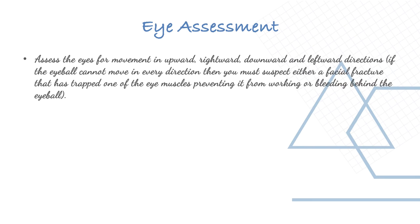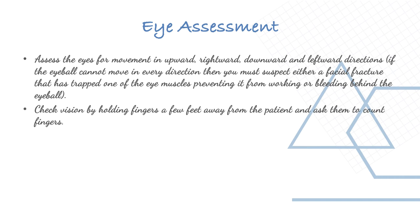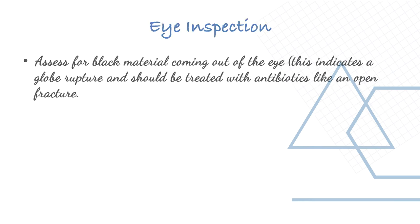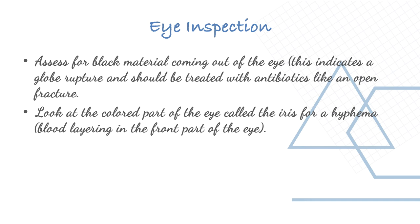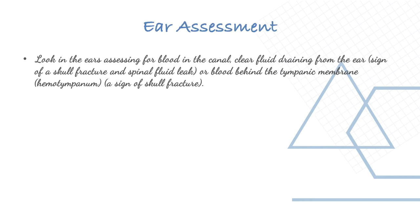Assess eye movements in up, right, downward, and left directions. If the eyeball does not move in any direction, suspect a facial fracture that has trapped an eye muscle or bleeding behind the eyeball. Check vision by holding fingers a few feet away and asking the patient to count them. Assess for dark material coming out of the eye, which indicates globe rupture, treated with antibiotics like an open fracture. Look at the iris for a hyphema — blood layering in the front part of the eye.